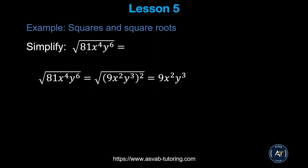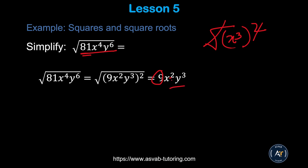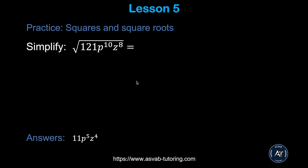Here is another example that appears frequently in the test: the square root of 81x⁴y⁶. Treat each term separately. The square root of 81 is 9. The square root of x⁴ is x². For y⁶, you can write it as (y³)², so the square root and the square cancel out to give y³. The answer is 9x²y³. Try it by yourself and make sure you get this answer.